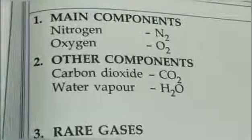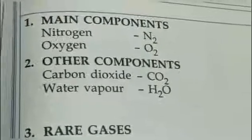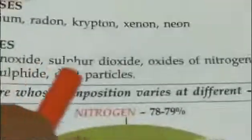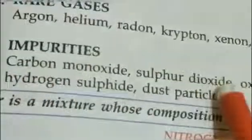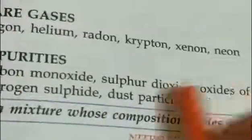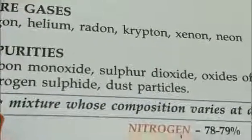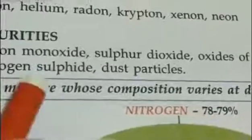Rare gases like argon, helium, radon, krypton - all these are inert gases. They don't react normally. Impurities like carbon monoxide, sulfur dioxide, oxides of nitrogen, hydrogen sulfide, and dust particles. These components are released in the air after petroleum is burnt or by certain factories, so they vary.